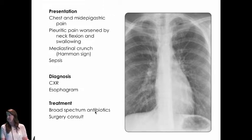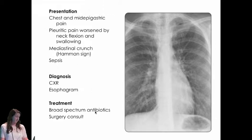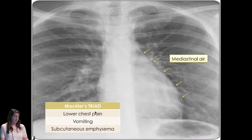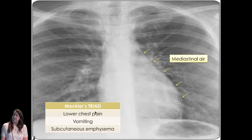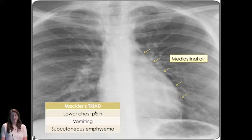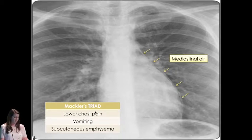Diagnosis is by chest x-ray, and if you want more information, you get an esophagram. When you see these patients, start them on broad-spectrum antibiotics and get surgery involved immediately. On the chest x-ray you can see mediastinal air. Mackler's triad is very pathognomonic of Boerhaave syndrome but unfortunately only occurs in about 50% of cases — it's lower chest pain, vomiting, and subcutaneous emphysema.